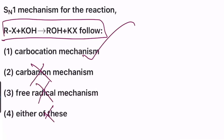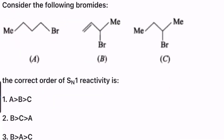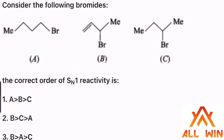Consider the following bromides. What is the correct order of SN1 reactivity? The correct answer is option 2.